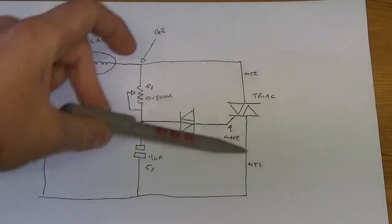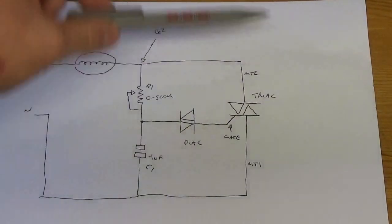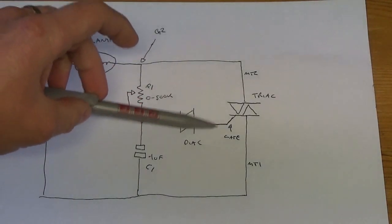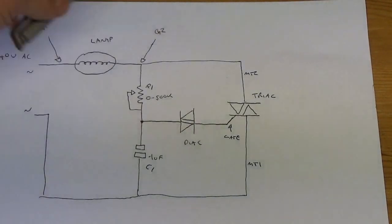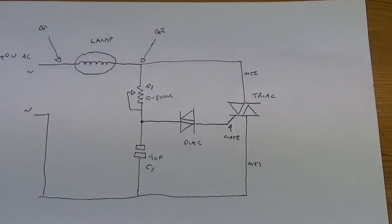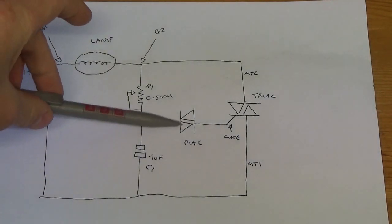And this one here is the triac. You've got the gate, MT1, MT2. It's very similar to a thyristor that receives a voltage from the gate and it'll start conducting, but the thyristor would only be able to conduct on the positive half. With the triac it can conduct like the diac, negative and on the positive half of the cycle.